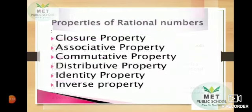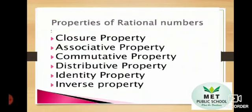Now let us see the different properties of rational numbers. There are 6 properties: closure property, associative property, commutative property, distributive property, identity property, and inverse property. In the next class, you are going to study in detail about all these properties of rational numbers.